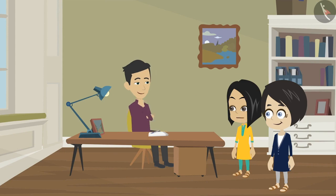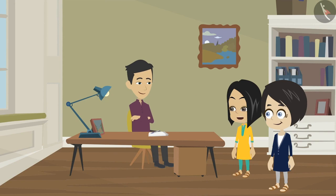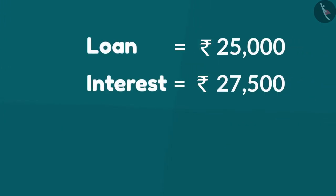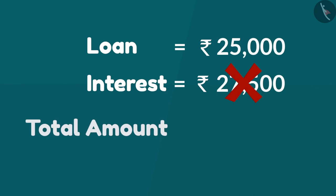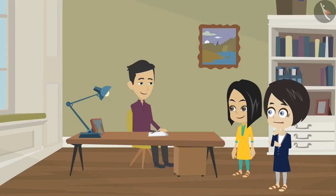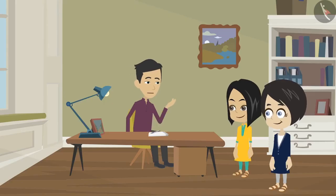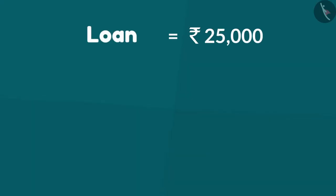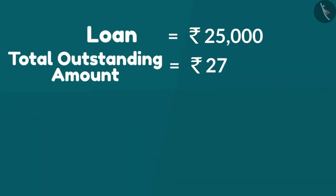Dad, Mina's dad took 25,000 rupees loan — then why does he need to pay 27,500 rupees as interest? No my girl, he won't be paying 27,500 rupees as interest. 27,500 is the total amount which is to be paid along with principal. What does that mean uncle? Look, your dad has taken 25,000 rupees loan and he has to repay 27,500 rupees to the bank.